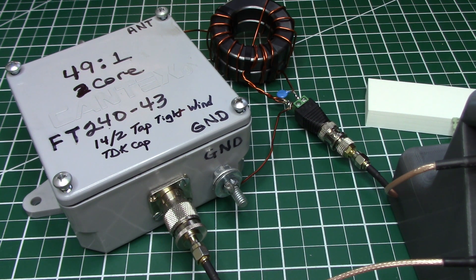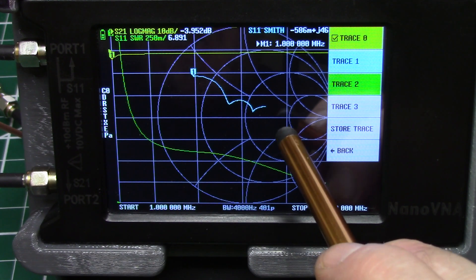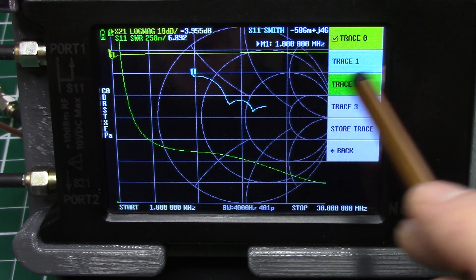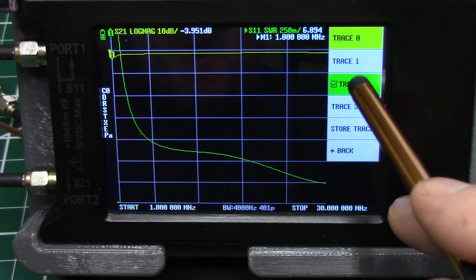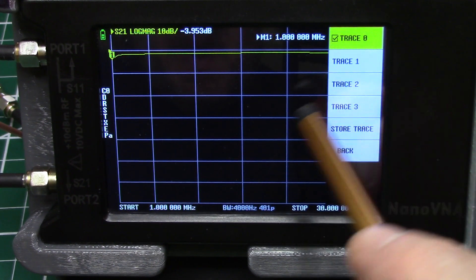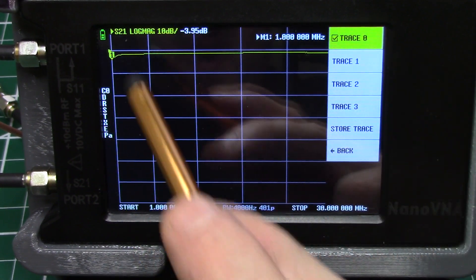Let's get back to the NanoVNA. So that was our test rig what we're going to be measuring. But we want to turn off the rest of these traces. Turn off trace one, turn off trace two.